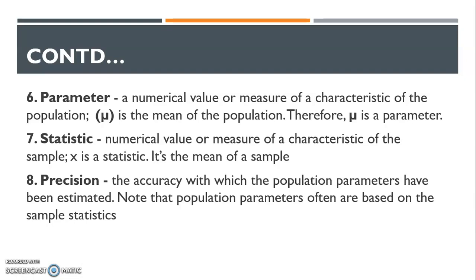What is a parameter and what is a statistic? We talk about statistics because we analyze a sample. A statistic is a numerical value or measure of a characteristic of the sample — any analysis we do on the sample is called a statistic. We normally use statistics to infer or determine the characteristics of a population, which we call a parameter. A parameter is a numerical value or measure of a characteristic of the population. Therefore, X-bar, which is the mean of a sample, is a statistic, whereas mu, which is the mean of the population, is a parameter.